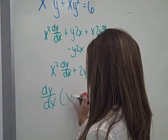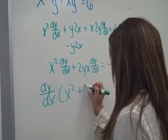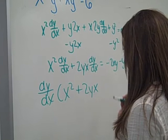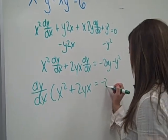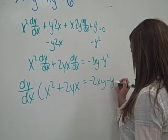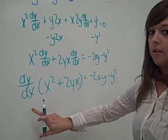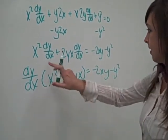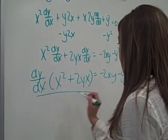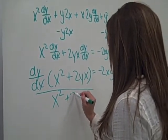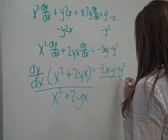So we can just factor this out. Then we can just divide by x squared plus 2yx, both sides.